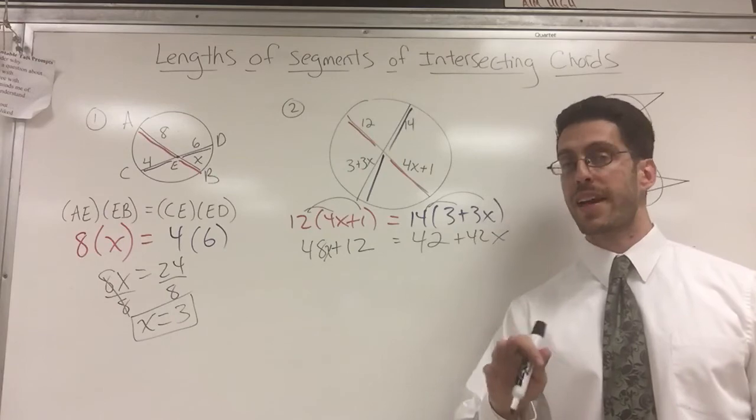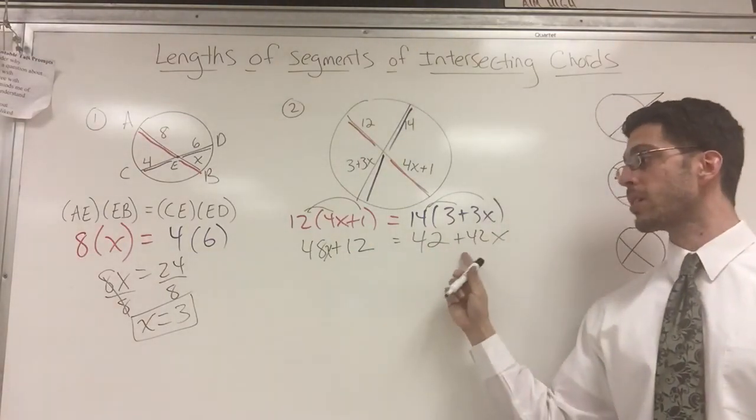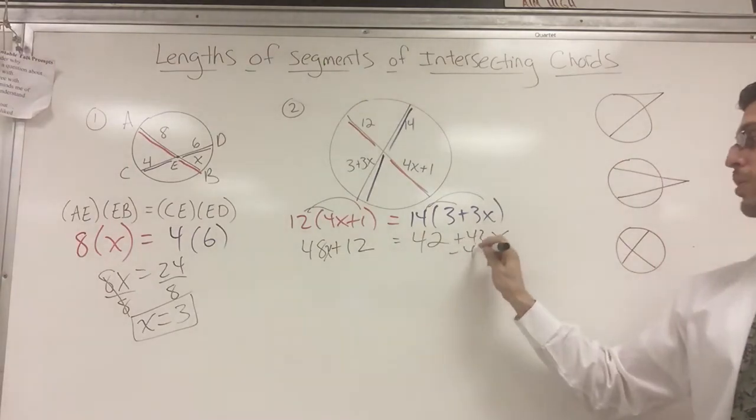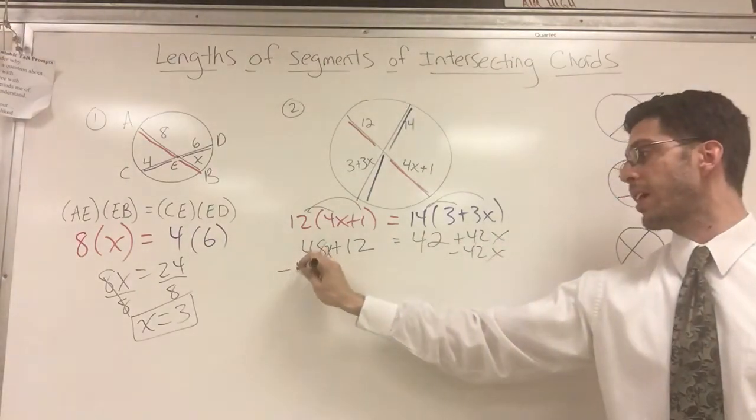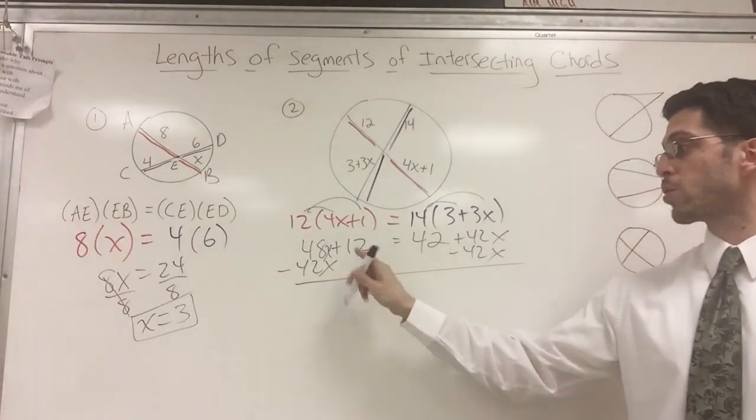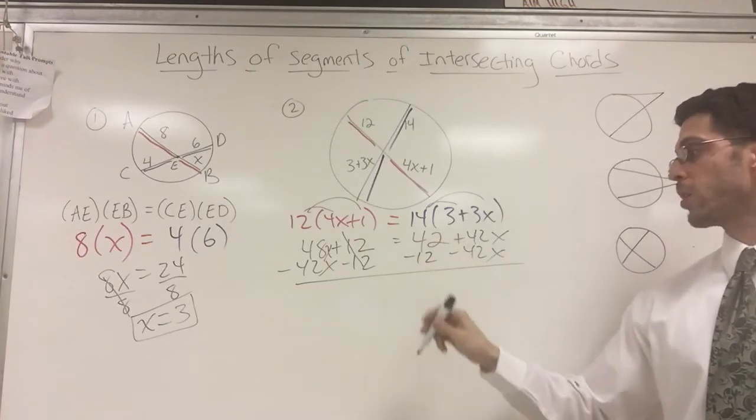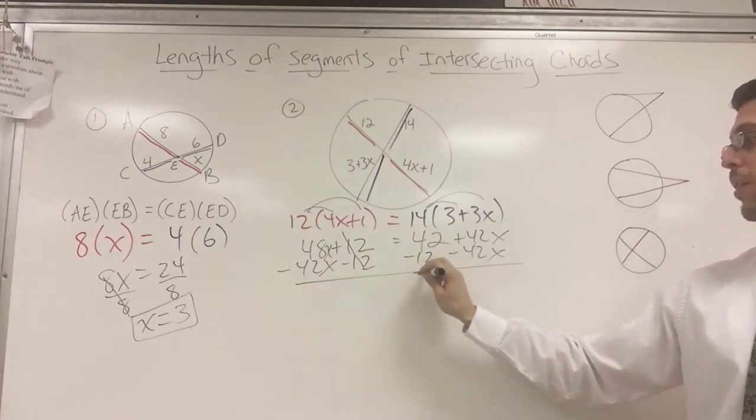So you want to combine like terms, right? Not exactly. My like terms are not on the same side of the equal sign. I got to bring them to the same side. So I'm actually going to subtract the inverse here and bring that 42X over there. And to save space, I'm going to subtract 12 and bring it over here. 12 cancels. 42 minus 12 is 30.